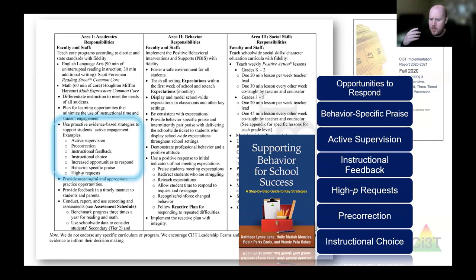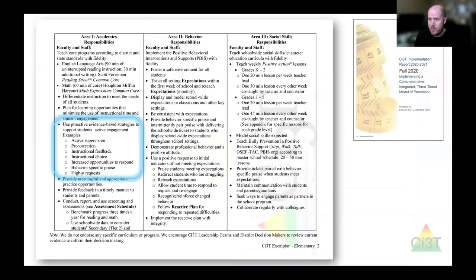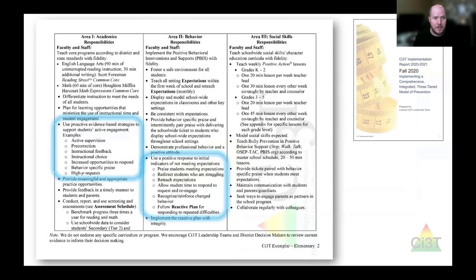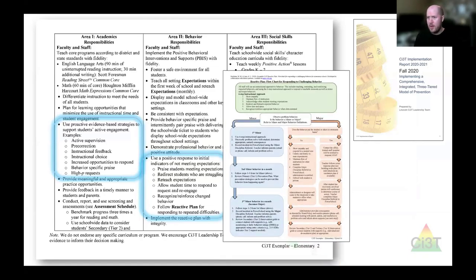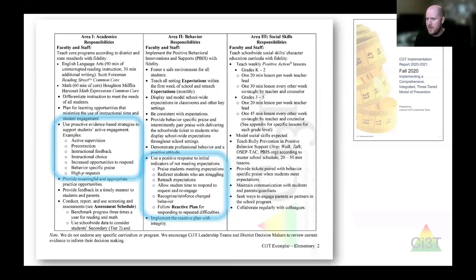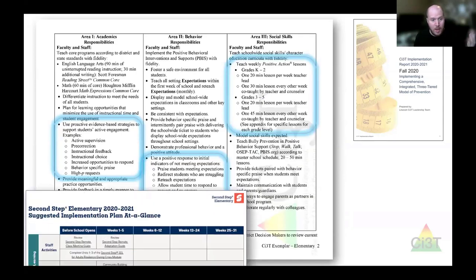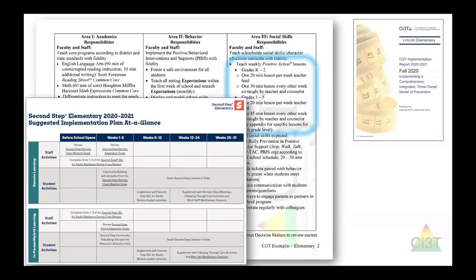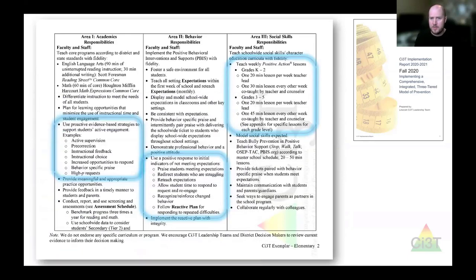We're not looking at a thousand and one ways to punish a kid — it's how do we provide kids with the instruction they need so they can make better choices in the future? We can do that through developing and implementing our six-step approach to supporting behavior, giving teachers the skills they need to react efficiently. For social-emotional well-being, we outline what curriculum we're teaching — something like Second Step, Positive Action, or Harmony — things that we as a school community can help develop and support for kids.